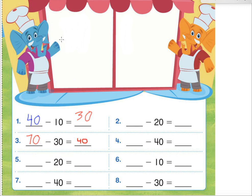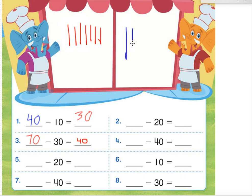Maybe we're not sure and we want to check our work with pictures. We make seven 10 sticks: one, two, three, four, five, six, seven. And we're taking away 30, so that's three over here: one, two, three. We cross out three: one, two, three. How many sets of 10s are left? One, two, three, four. Four sets of 10s makes 40. So we did a great job — we have the same number from both methods.